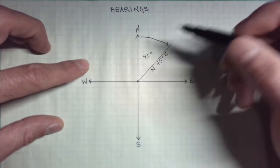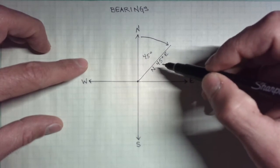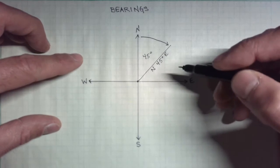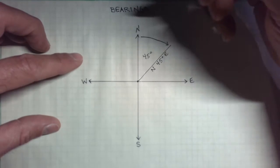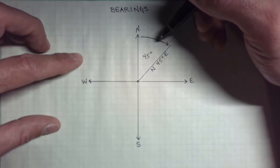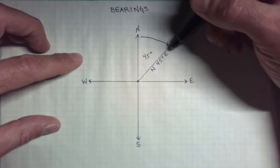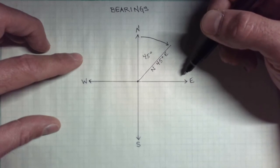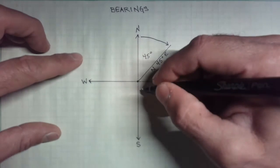Or if there are minutes and seconds, it would be north 45 degrees, some minutes, some seconds east. So in the northeast quadrant, we're always saying from the north towards the east some number of degrees.